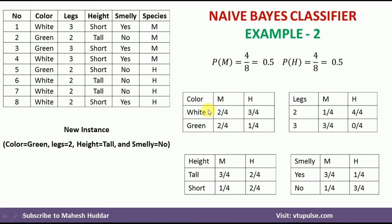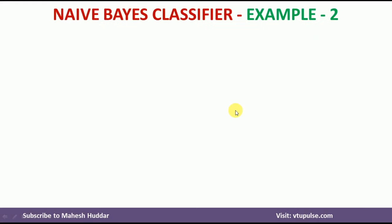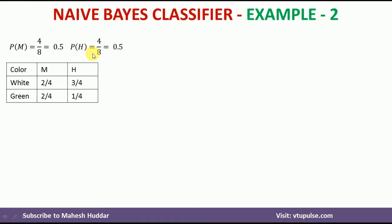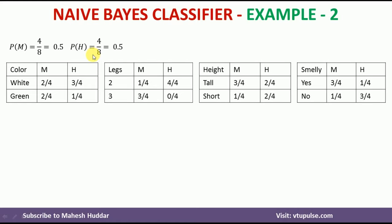From these tables, we understand that, for example, the probability that color equals white given M is 2/4, and the probability that color equals green given H is 1/4, and so on. We now have the prior probabilities and the conditional probabilities of the individual attributes, which we will use to classify the new instance.